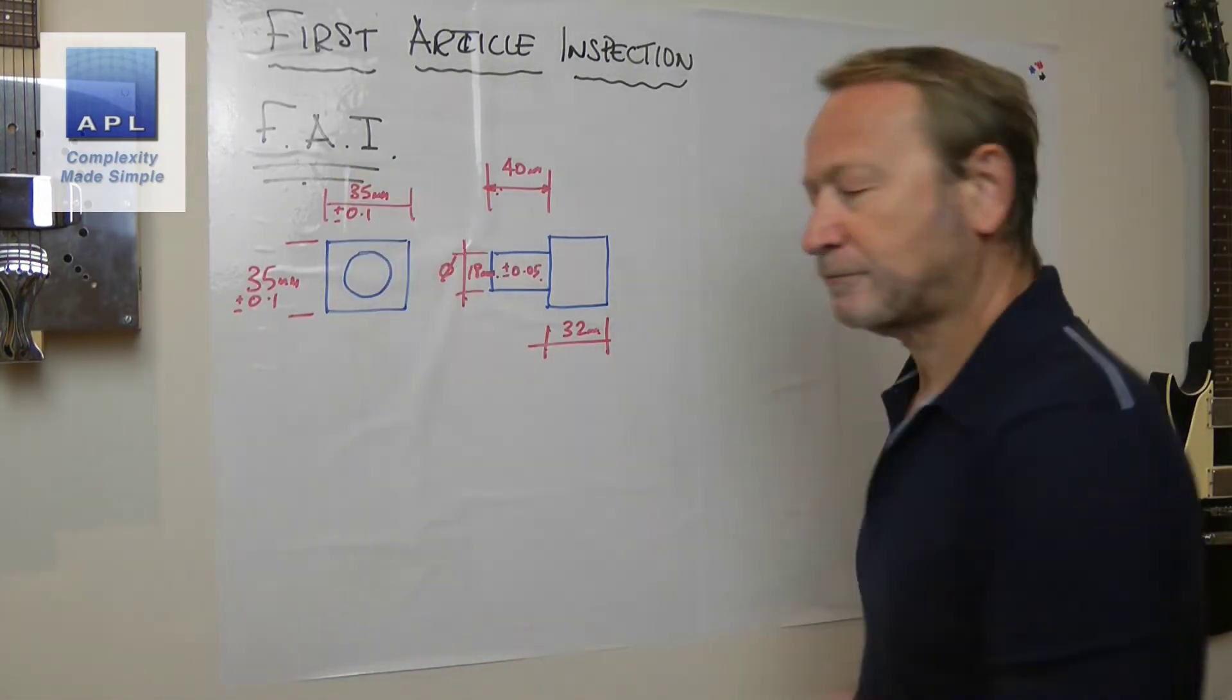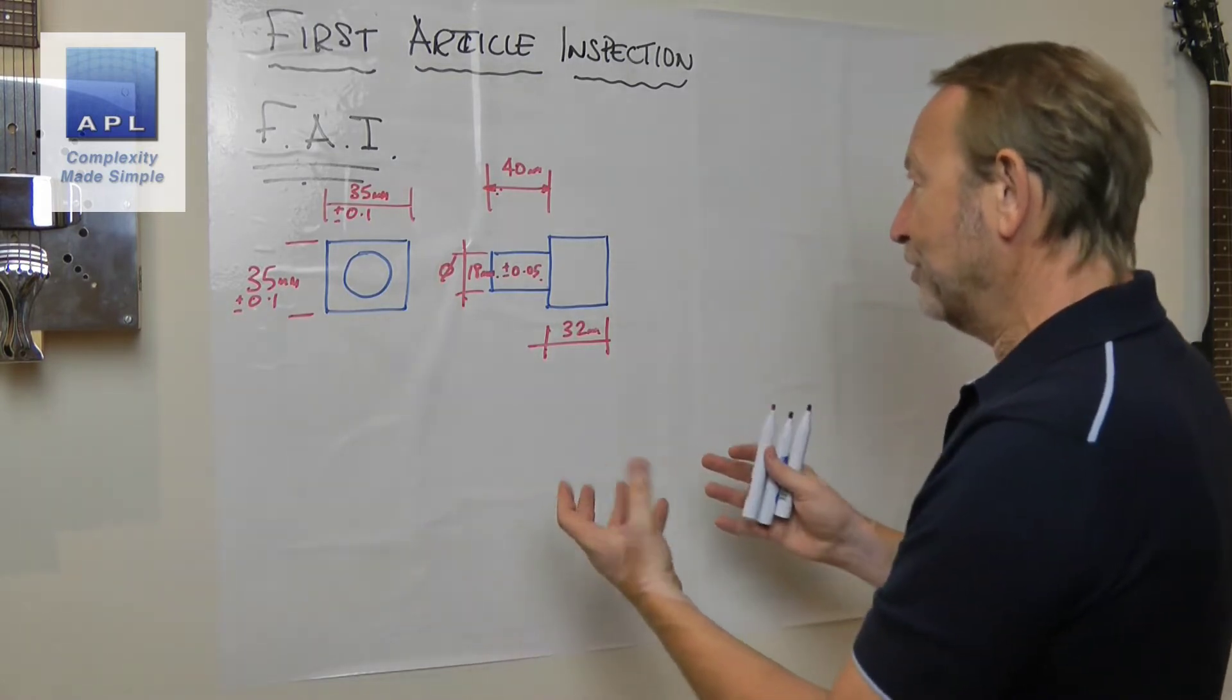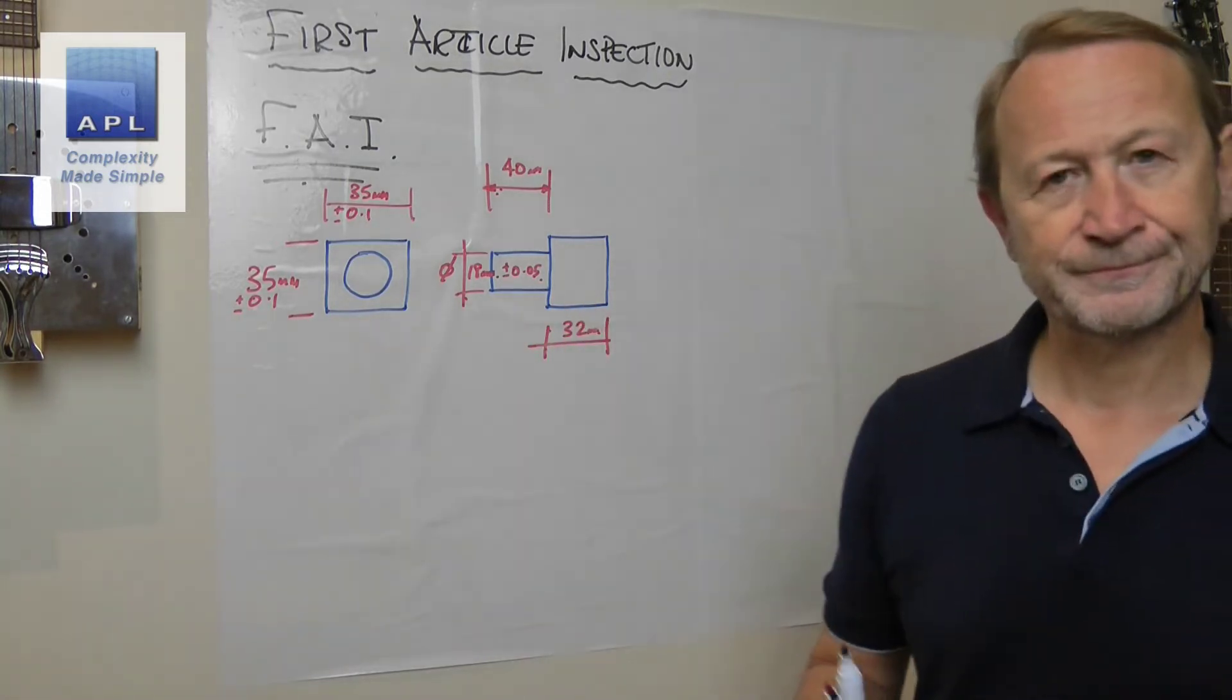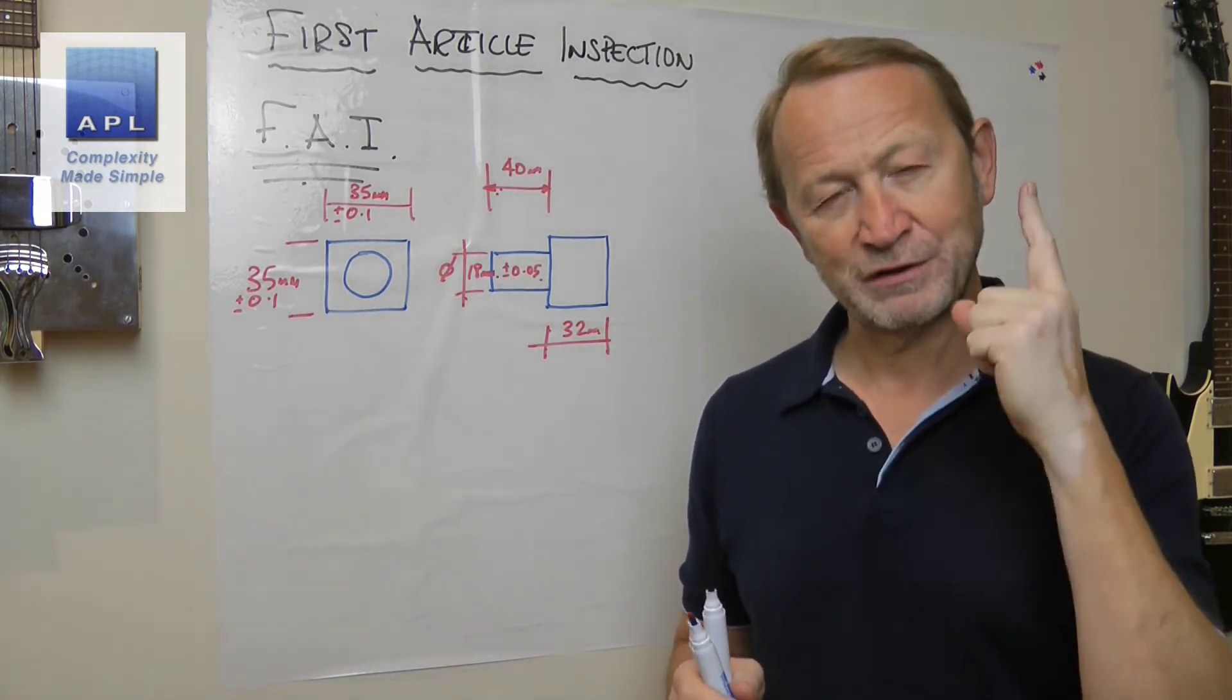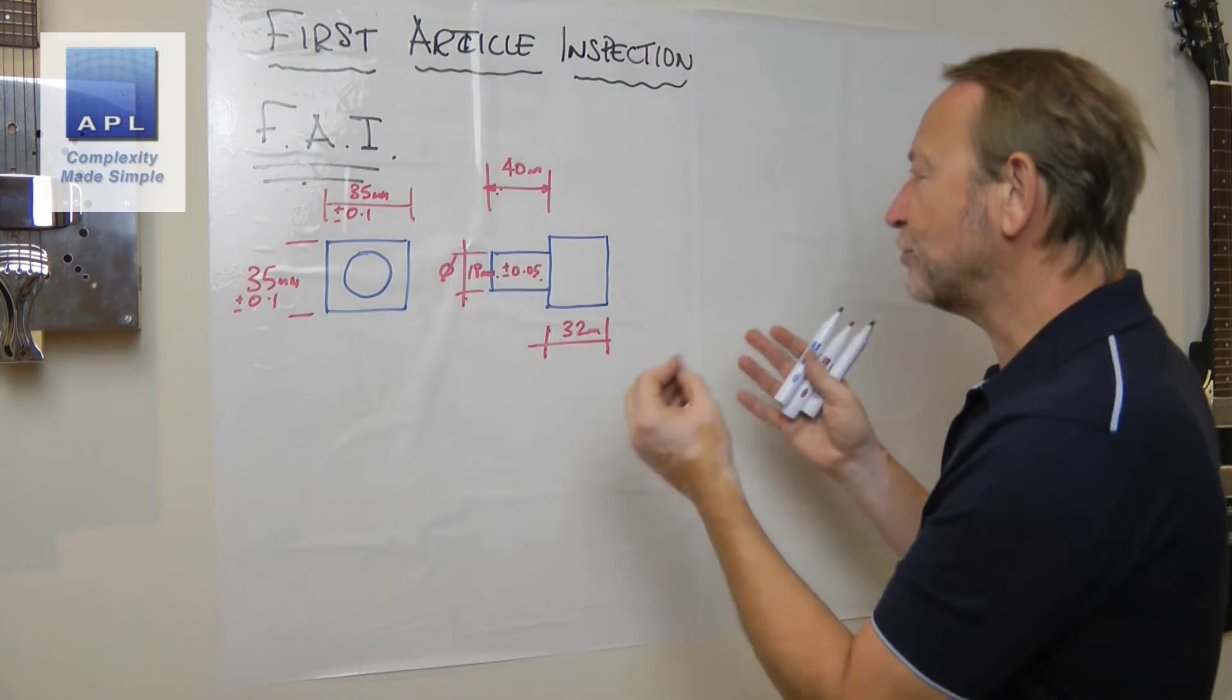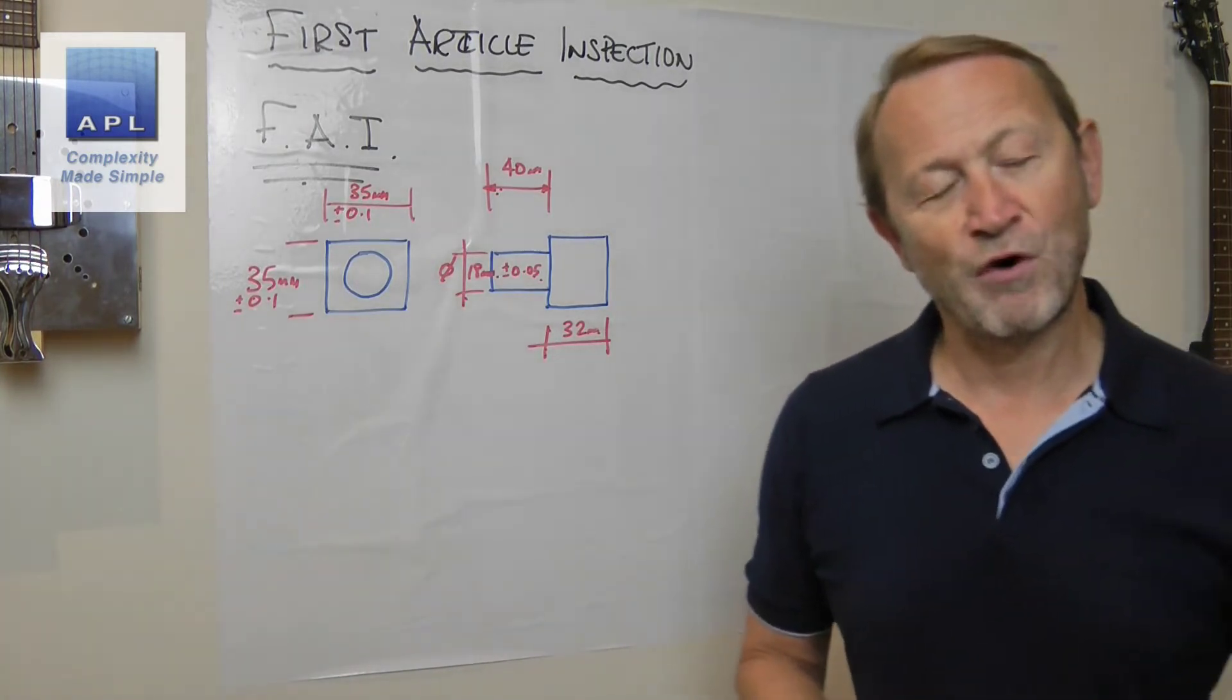You've been asked to make this by one of your big customers. Here's the item that they've asked you to do, and you've made a first article in order to do the First Article Inspection. Now it's one data point, just one single data point. What do you think this thing is capable of telling you?